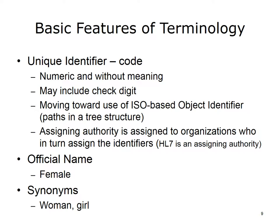Basic features of terminology include a unique identifier or code with these characteristics: numeric and without meaning, may include a check digit, moving toward use of ISO-based object identifiers called OIDs — paths in a tree structure. An assigning authority is assigned to organizations who in turn assign the identifiers. HL7 is an assigning authority. Official name — an example is 'female.' Terminology may have synonyms, such as woman or girl for female. Codes have the value of being absolute, precise, and unambiguous. If codes are what we exchange, we cannot misinterpret. We can further relate the code with a set of attributes or characteristics, as a preferred name or a synonym.